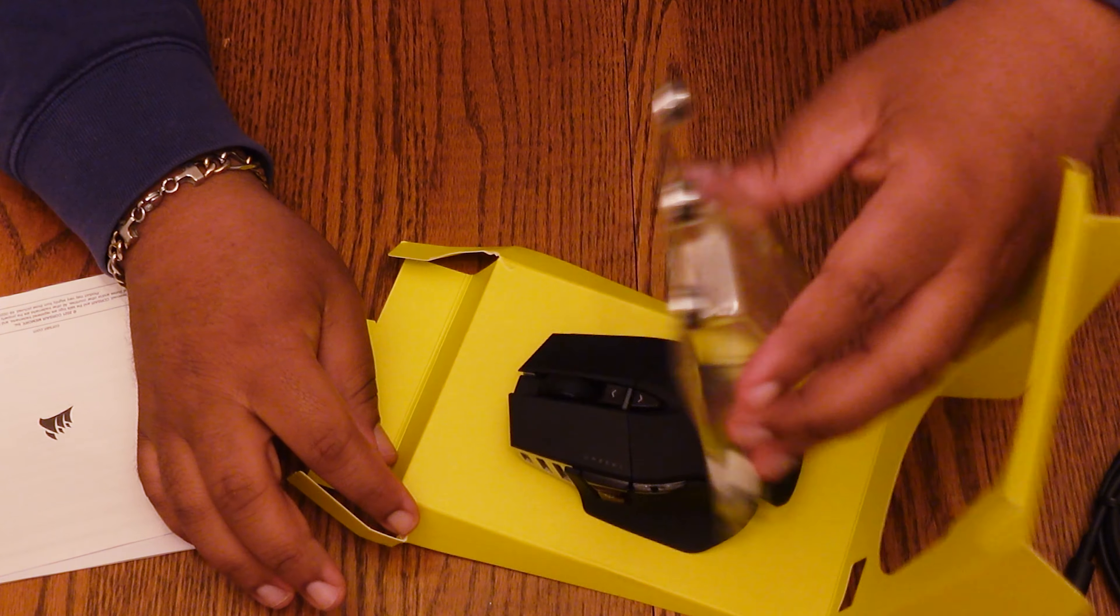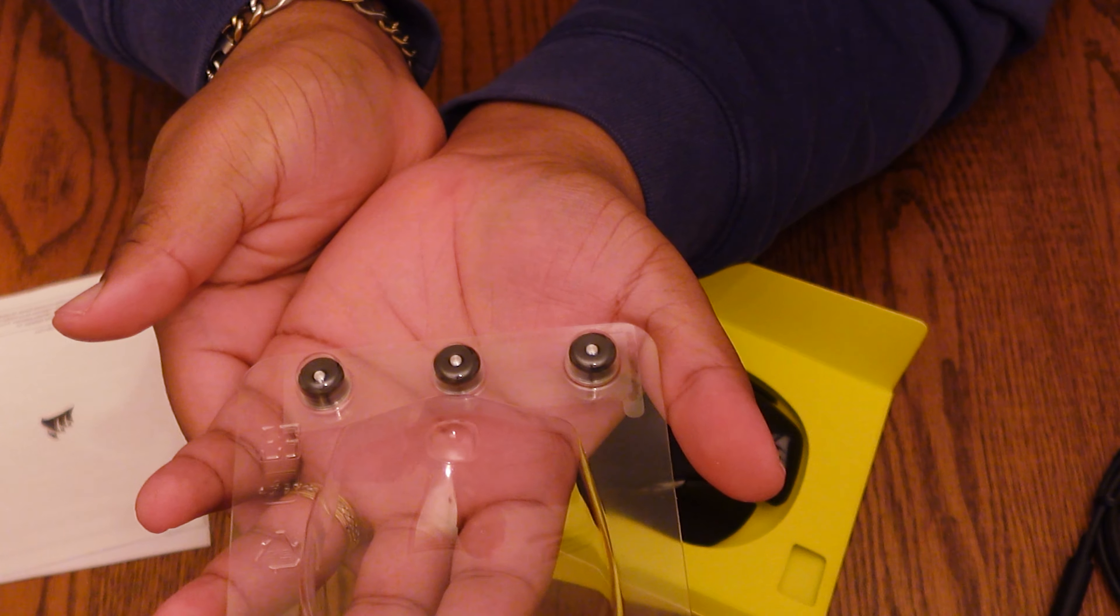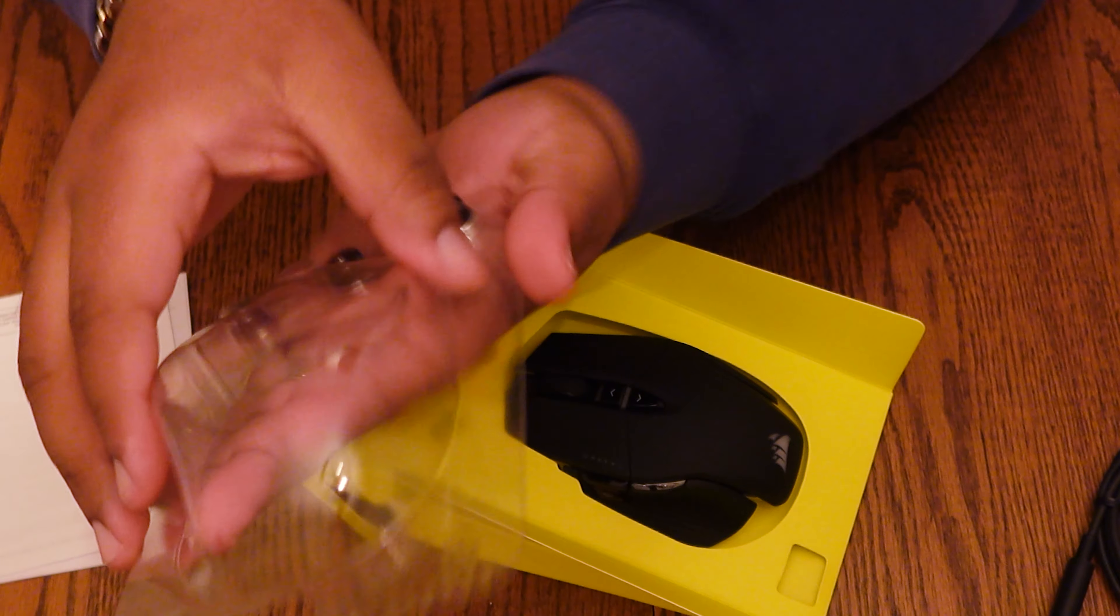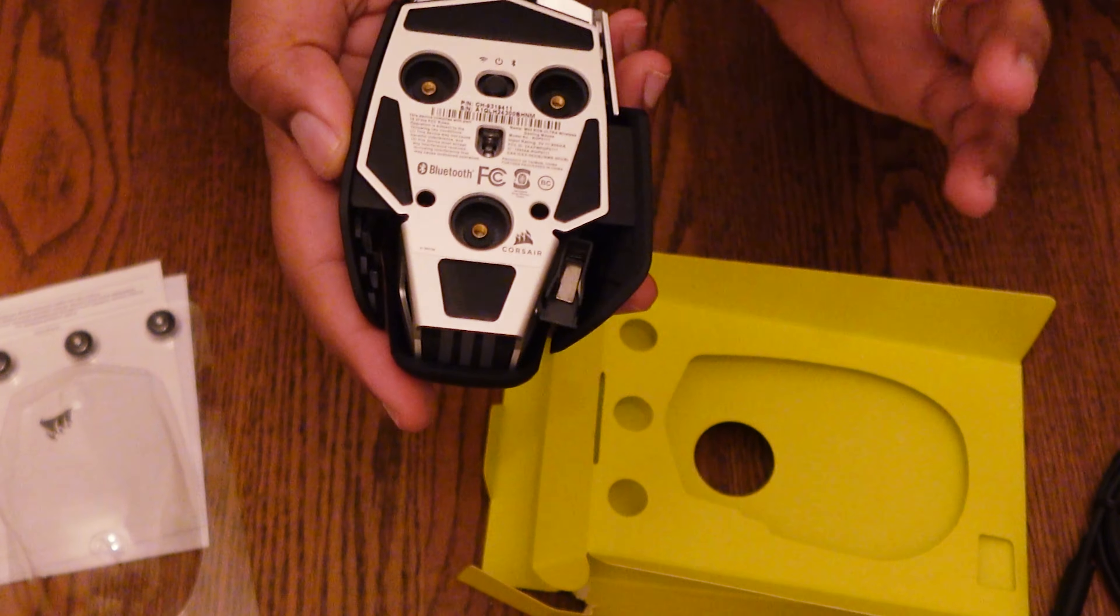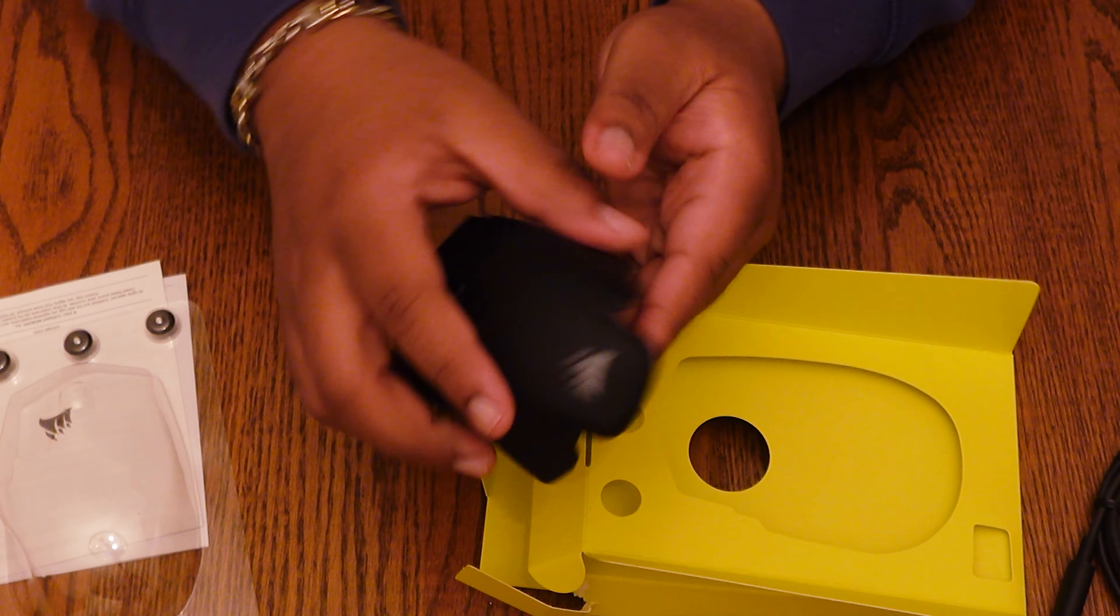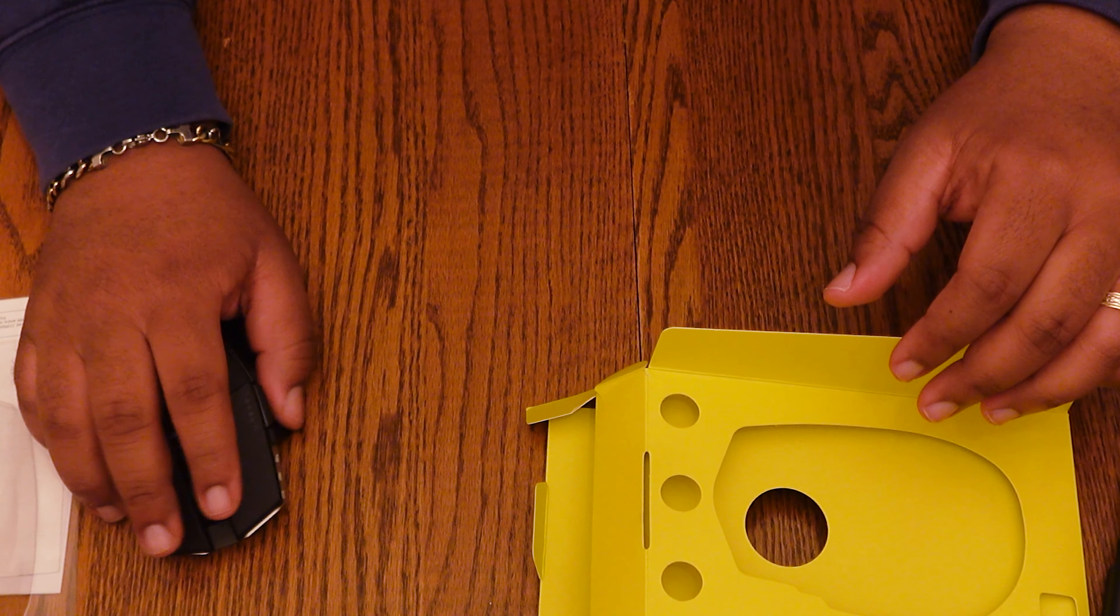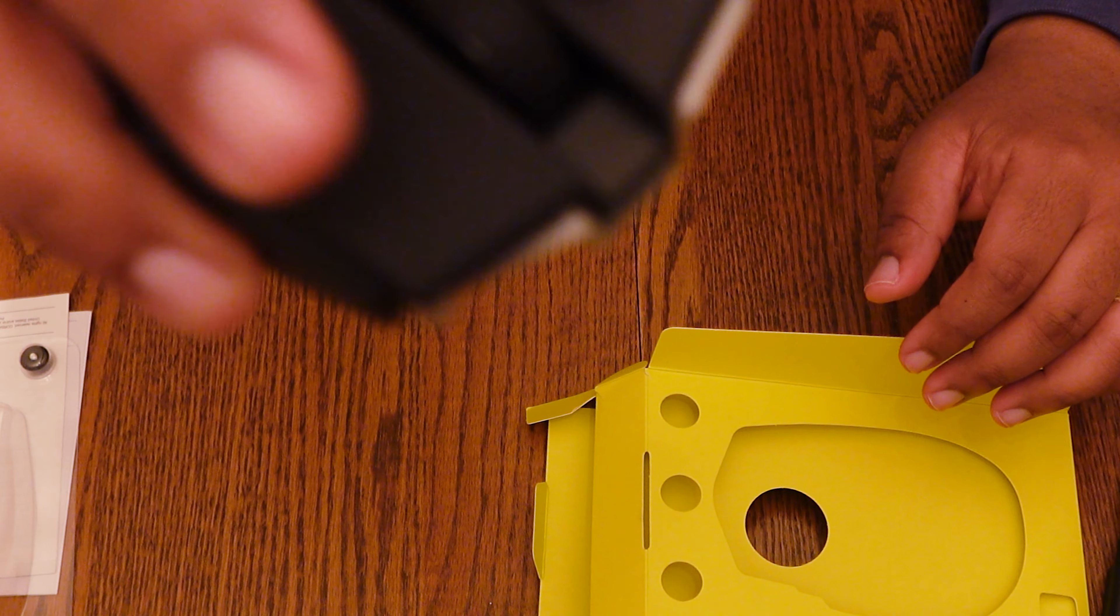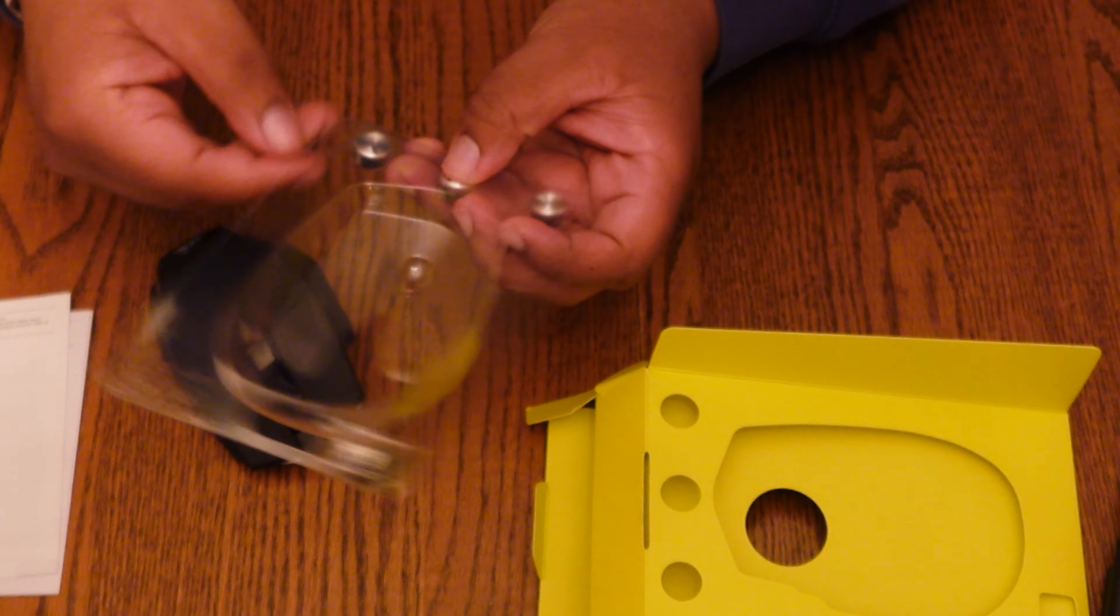So I got that open. So these pieces here are the weights that I was referencing. I will be able to go ahead and pop those right underneath the bottom. That's what these three holes here are for in order to have a heavier mouse right off the bat. I don't know if y'all can hear those clicks. Yeah, this thing is going to be it. Let me see how heavy this thing feels.